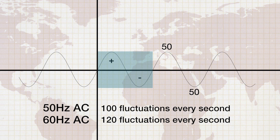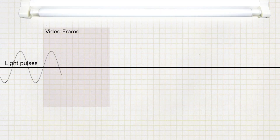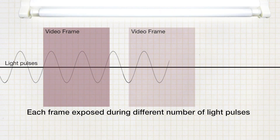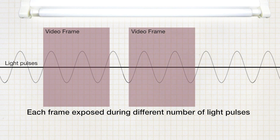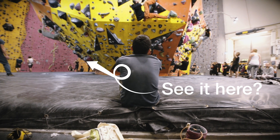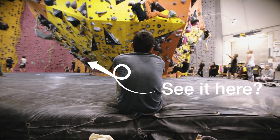The result is that we get the same number of light pulses changing every second, and our eyes cannot detect this, but the camera can. If successive frames of our video are exposed during different periods of the light pulses, they will get exposed differently and will appear to flicker.